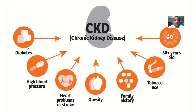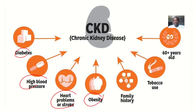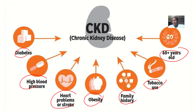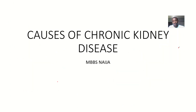Looking at this picture for a summary: we have diabetes, high blood pressure (hypertension), heart problems, obesity, and family history — this condition can run in families. Tobacco use increases your chances, and age is also a factor — if you are more than 60 years old, there is a higher chance of having chronic kidney disease. These are the various causes of chronic kidney disease.